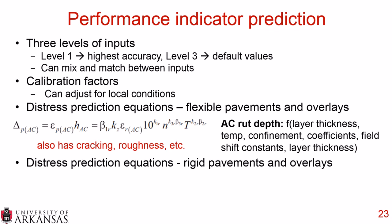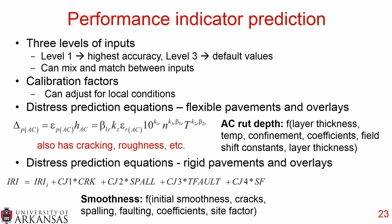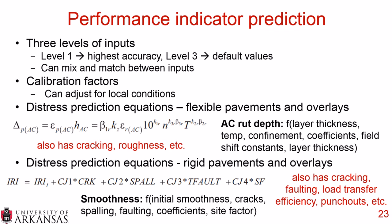For rigid pavements and overlays, looking at the smoothness equation: the International Roughness Index (IRI) is a function of initial smoothness, any cracks, any spalling, faulting, and also coefficients and site factors which need to be calibrated. Just like asphalt concrete, there are other equations for cracking, faulting, load transfer efficiency, and punch-outs. These are just two examples — one for flexible, one for rigid — of the performance indicator predictions, showing what inputs are necessary to predict actual distress quantities like asphalt concrete rut depth.